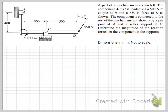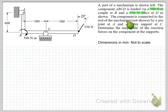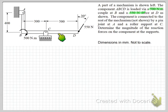We're told that it's loaded by a 500 Nm couple at B, which we can see in the diagram. We're also told that we have a 550 N force at D. The component is connected to the rest of the mechanism, which is not shown. In our diagram, the component is part of some mechanism, and where those connections are, there are representations of those connections.